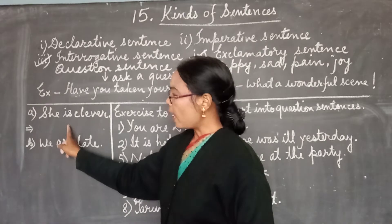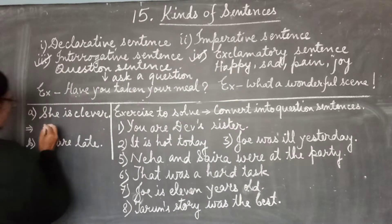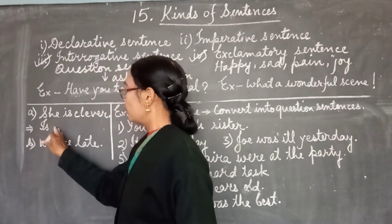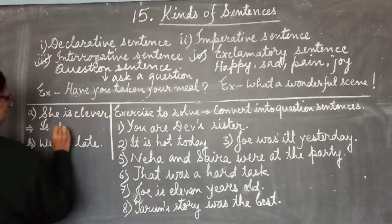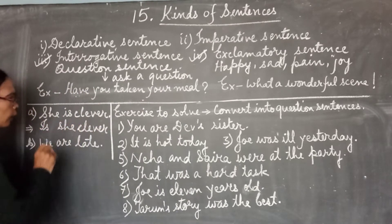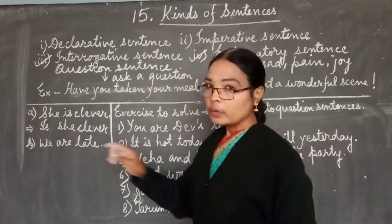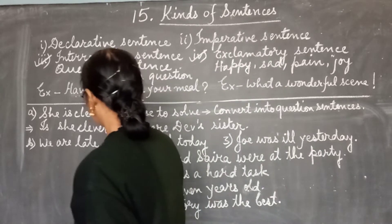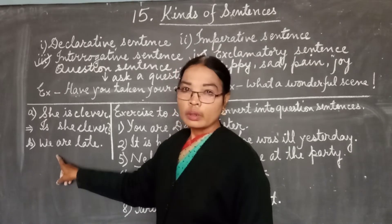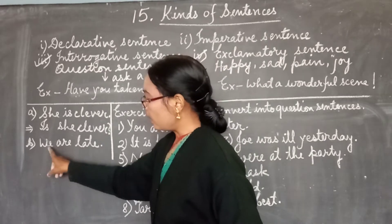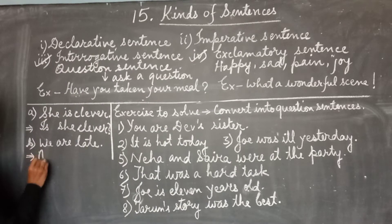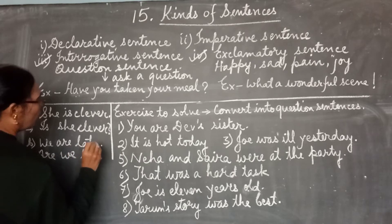To convert 'She is clever' into a question, shift the verb and bring it to the beginning of the sentence. So we get 'Is she clever?' — 'Is' comes first, then the subject 'she,' then the remaining word 'clever,' and at the end a question mark, not a full stop. For sentence B, 'We are late' becomes 'Are we late?' followed by a question mark.